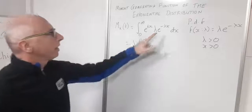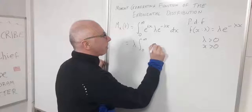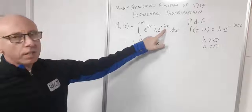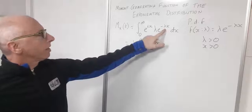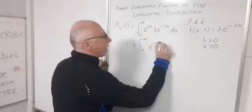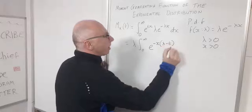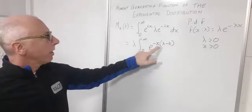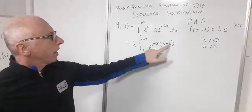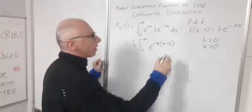Combining the exponentials: e^(−λx) and e^(tx) give us e^(−x(λ − t)), since factoring out −x yields −x(λ − t), which expands to −xλ + xt, matching our two exponent terms. Then we integrate with respect to x.